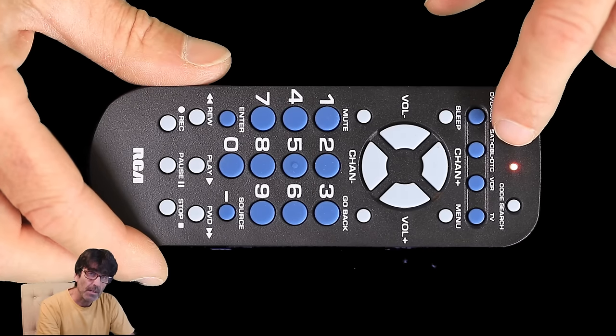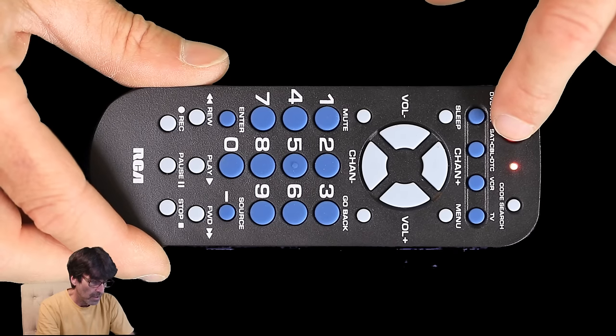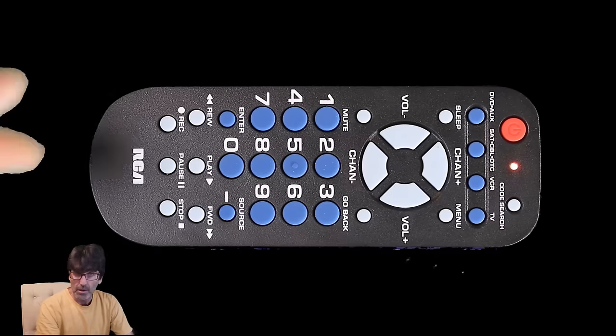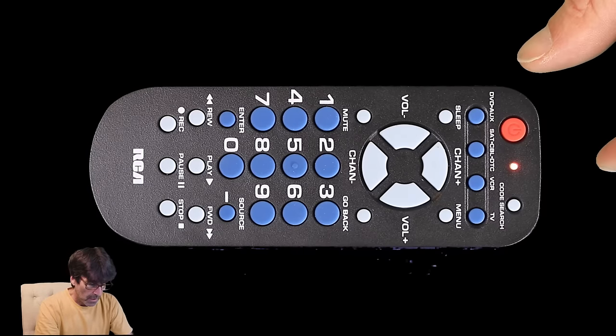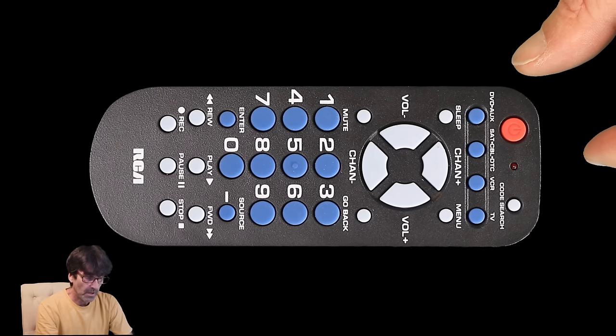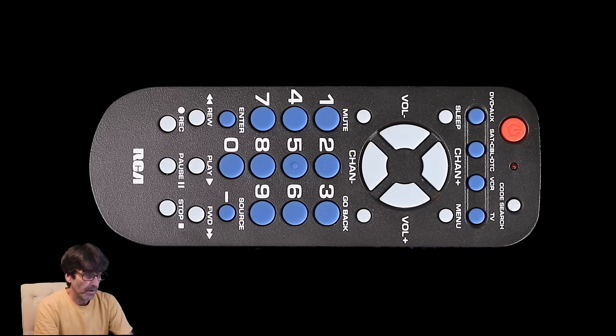You might have to do this a couple hundred times before you cycle through all the codes. Power, power. Oh, hypothetically, the TV just turned off. You're going to want to start with the TV on, by the way. So you've got to push enter within four seconds to save the code. Now it should work with your TV. I'm not going to try that because if I have to cycle through 200 codes, you all are going to get mad at me.